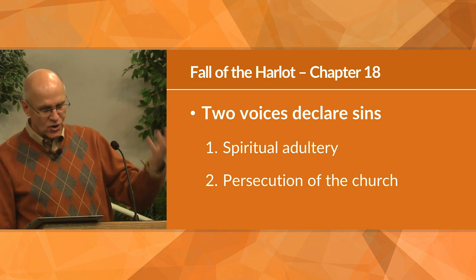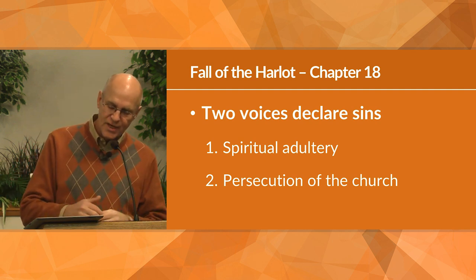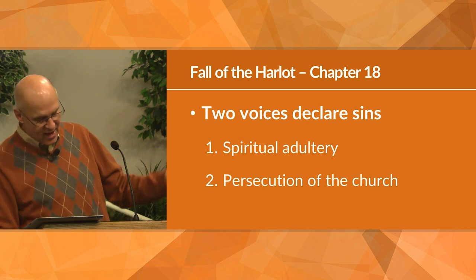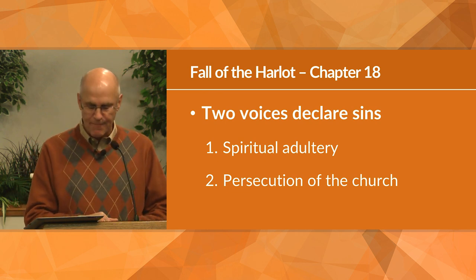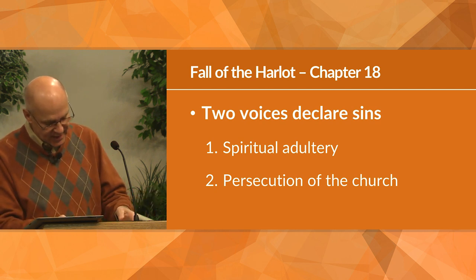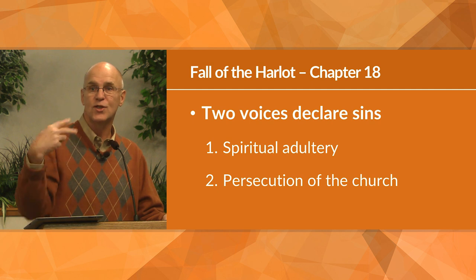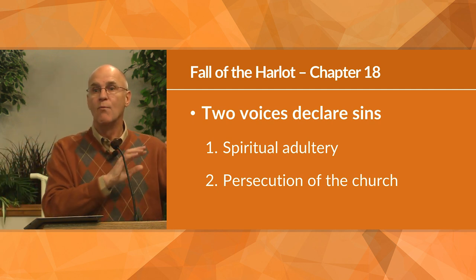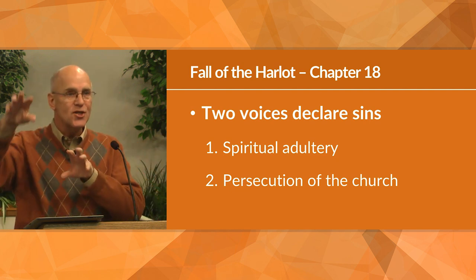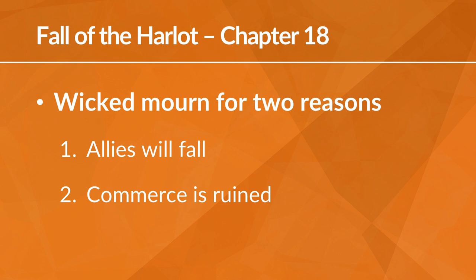The age-old sin of pride versus God — beginning with Satan himself and then every other ruler God has destroyed because of their pride, because they refused to submit to God's authority. Then in verses 9 to 19, after the announcement, comes the dirge — the lament, the mourning. As I said, not by God's people. The two voices declare the sins: spiritual adultery and persecution. The mourning comes from the nations entangled with Rome.